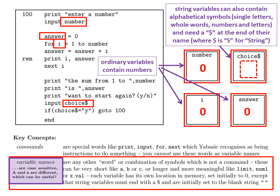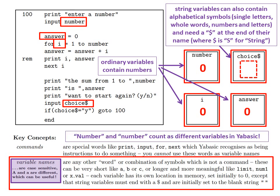Finally, do note that variable names are case sensitive. That is, capital A and lowercase a are different, which can be useful, but for beginners this can be a source of confusion. For example, number spelt capital N and number spelt lowercase n count as different variables in YARBASIC.